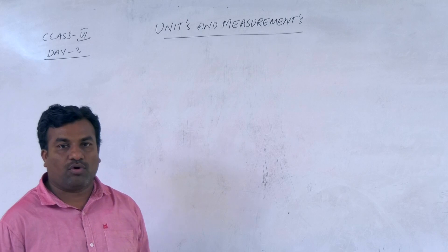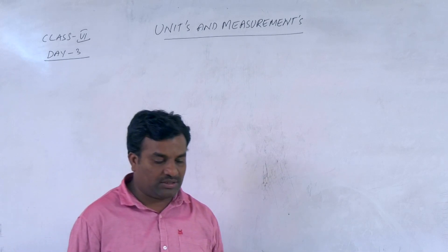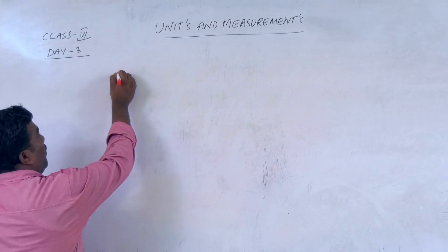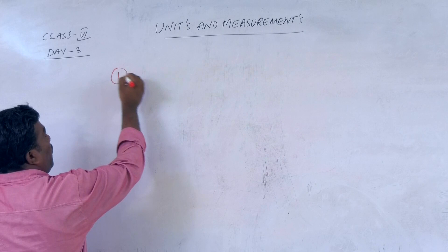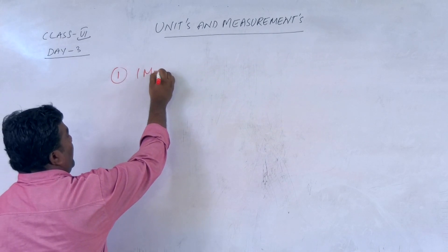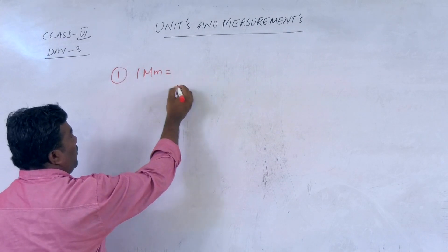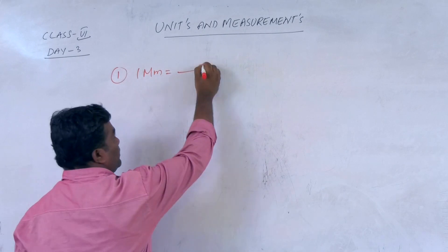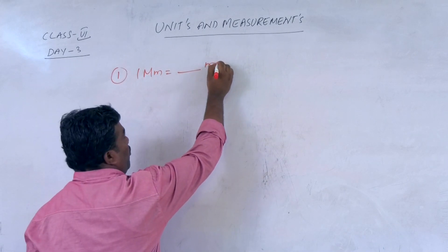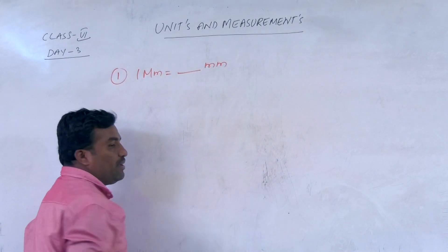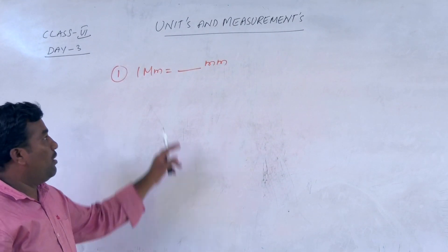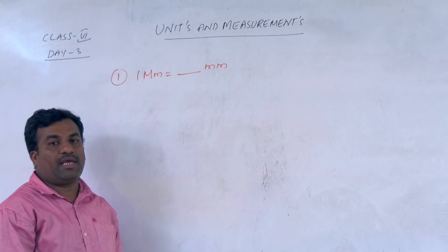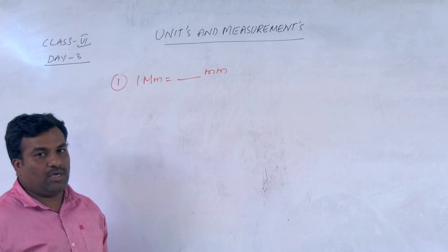Let's go with questions. First question: 1 megameter is equal to how many millimetres?